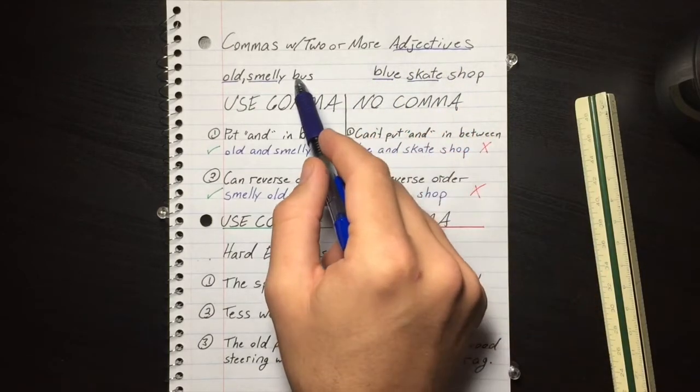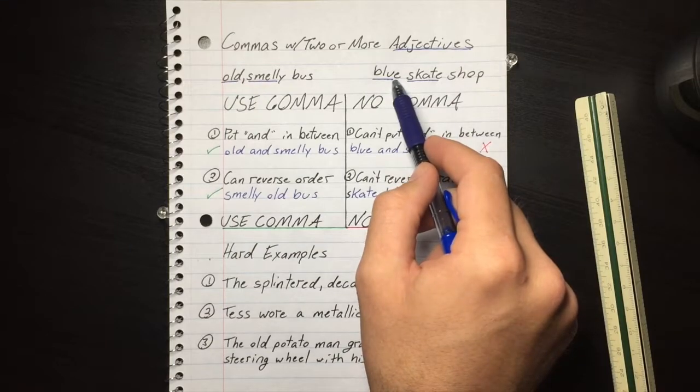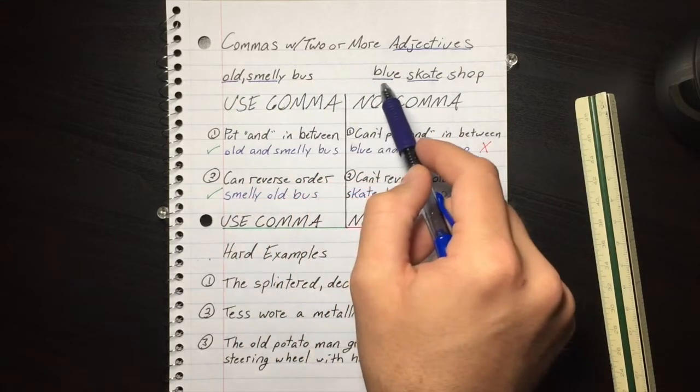Commas with two or more adjectives. We have two nouns here and each noun has two adjectives that describe it: the old smelly bus and the blue skate shop.